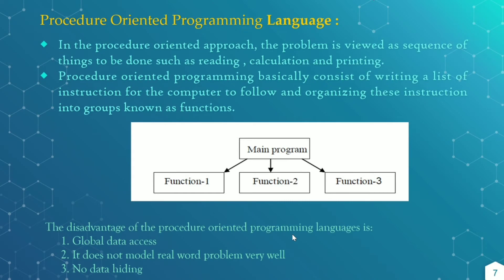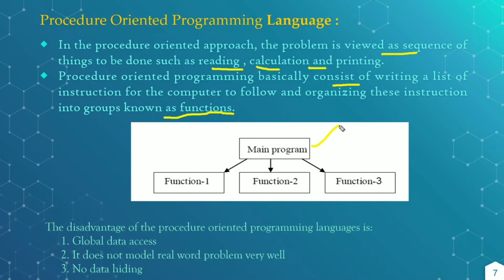Procedure Oriented Programming. In this, the problem is viewed as a sequence of things to be done, such as reading, calculation, writing, printing, etc. It basically consists of writing a list of instructions for the computer to follow and organizing those instructions grouped into a single unit. The main program can be divided into a different number of functions — function 1, function 2, function 3, up to function n. The instructions are grouped into functions and the large program can be divided into a number of functions.